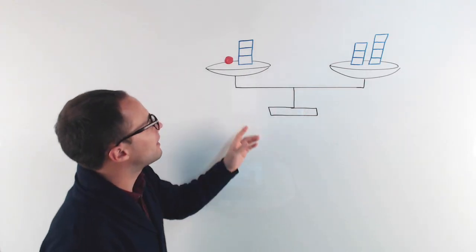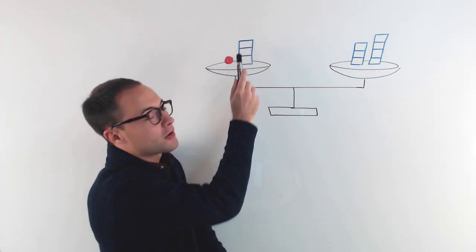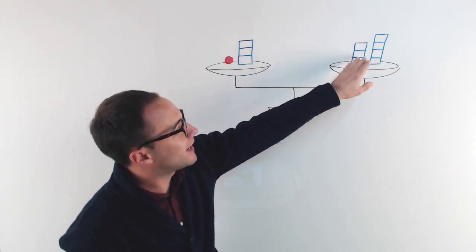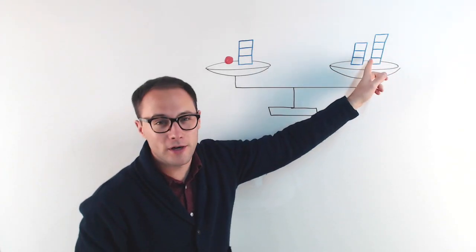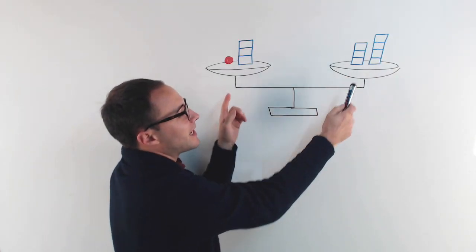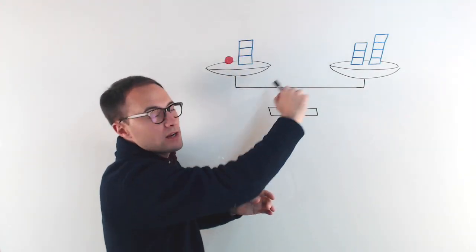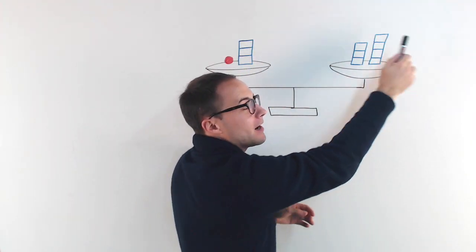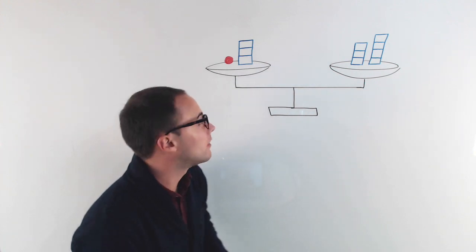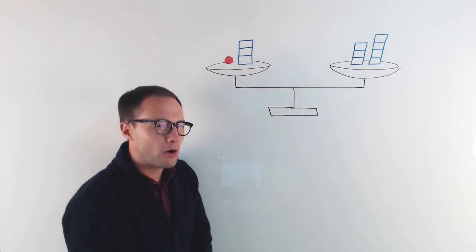Here's an example: I've got this red ball plus three little blue blocks, and on the other side I've got seven — three and four more is seven blue blocks. You can see on the scale it's balanced, which means the weight of this side is equal to the weight of that side. Now, if I want to figure out how much that red ball weighs...